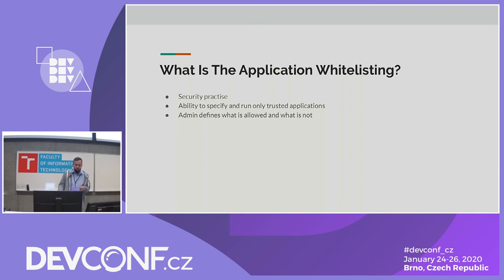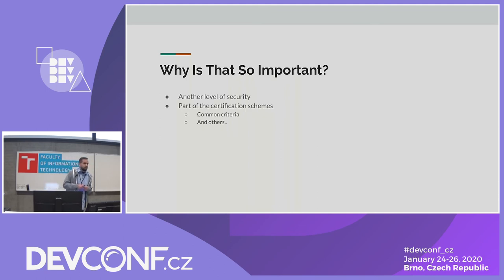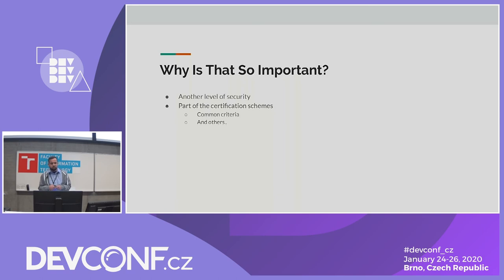Why is that so important? Well, there are at least two reasons: it adds another level of security to the system, and application whitelisting capability is part of many certification schemes — for example, Common Criteria and others. This actually pushes software vendors to implement some sort of application whitelisting solution.